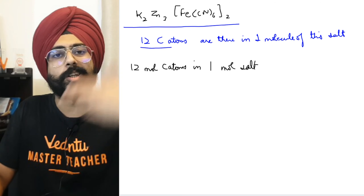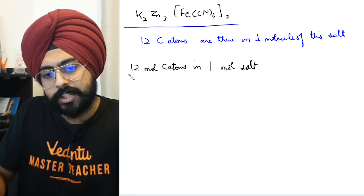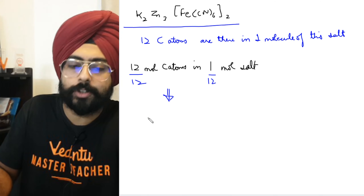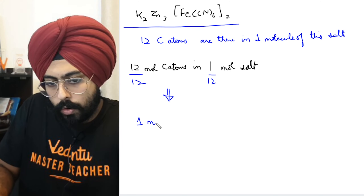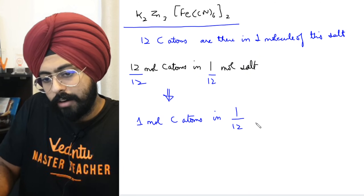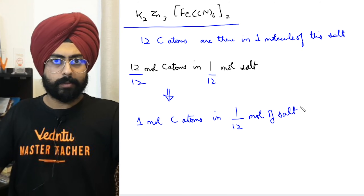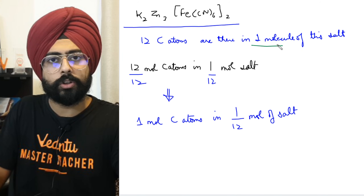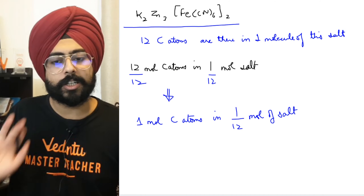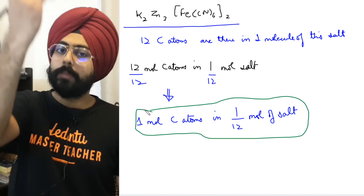Converting the statement into moles: 12 moles of carbon atoms are in one mole of salt. Dividing both sides by 12: one mole of carbon atoms are in 1/12 moles of salt. Step by step — this is the statement we now understand.